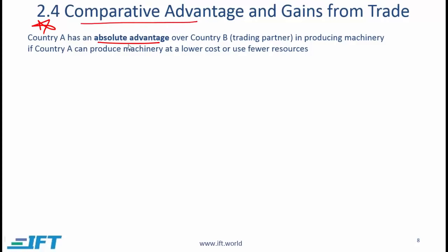Country A has an absolute advantage over country B, which is a trading partner, in producing machinery if country A can produce machinery at a lower cost or use fewer resources. When we talk about absolute advantage we are comparing two countries in the context of a particular good or service, and this definition is fairly straightforward. If A can produce machinery more efficiently — at a lower cost or with fewer resources — then we say that A has an absolute advantage.